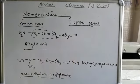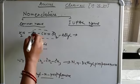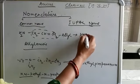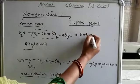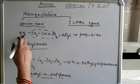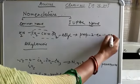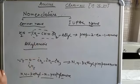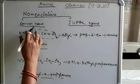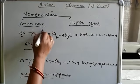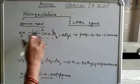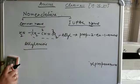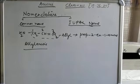What about the IUPAC name? Count the carbons: 1, 2, 3 — there are three carbons. So: prop, then 2-en, then 1-amine. The IUPAC name is prop-2-en-1-amine. So commonly it is called allylamine and the IUPAC name is prop-2-en-1-amine.